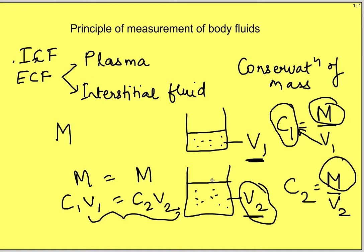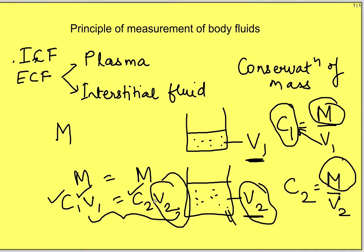What we do is take out a sample of the solution and determine the concentration of the substance in this particular solution. We already know c1 and v1. By determining the concentration in the new solution we will know c2, and by solving the equation c1v1 equals c2v2, we can determine the unknown volume v2.